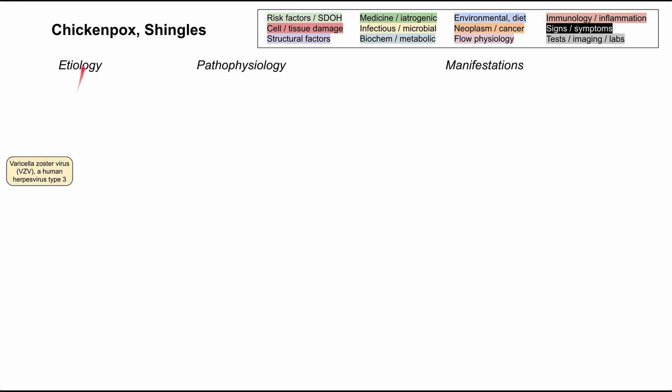Both chickenpox and shingles start with a virus called varicella zoster virus, abbreviated VZV. It's actually a herpes virus — a human herpes virus type 3. There are a few ways this virus can be transmitted: by airborne droplets, by direct skin contact with vesicles on the skin, and transplacentally. So if a mother has a varicella infection, she can transmit it to the fetus.